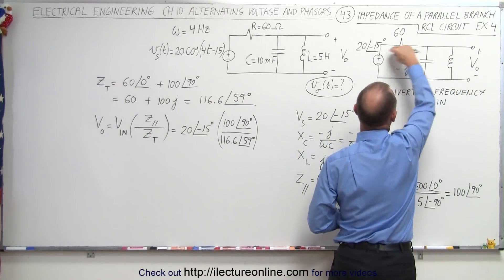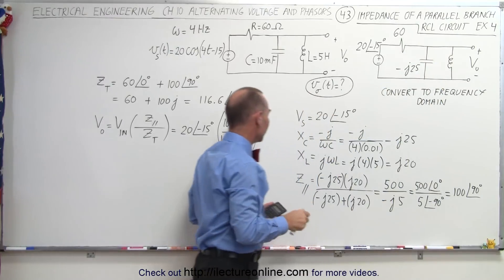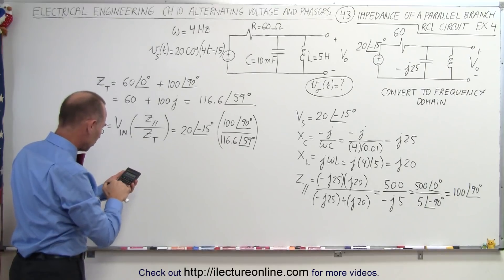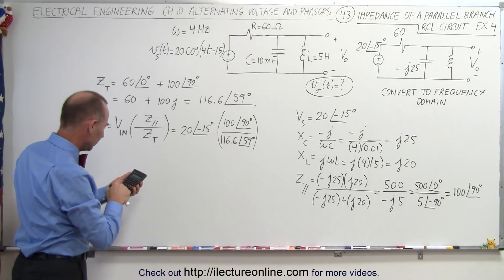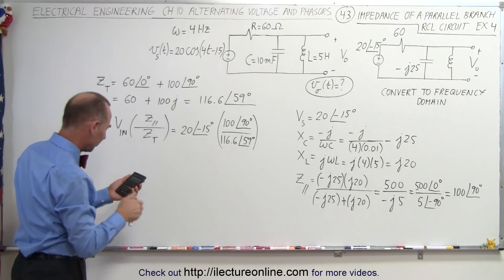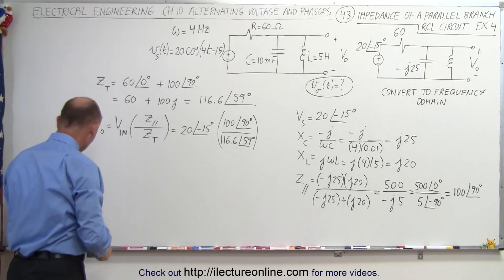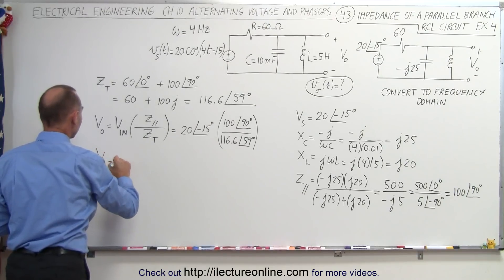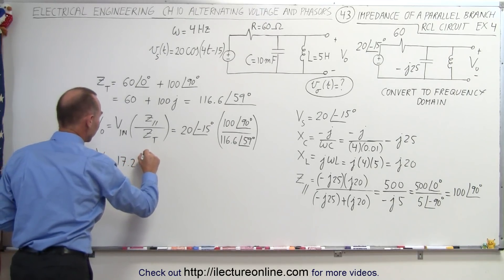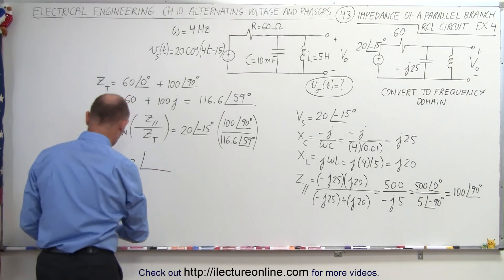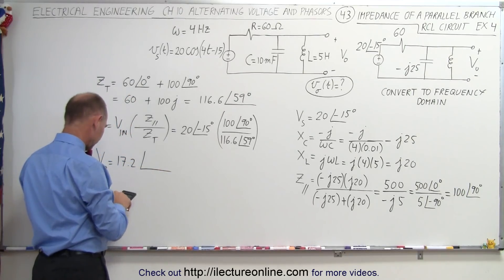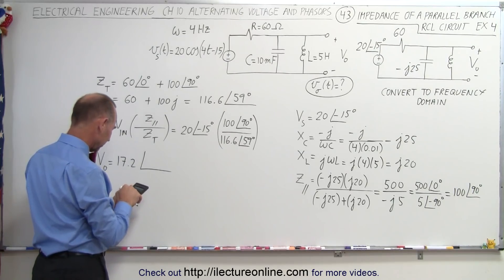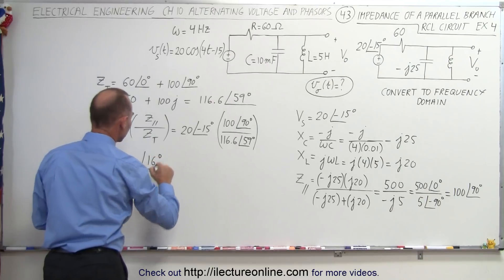That gives us the portion of the voltage across the two parallel paths relative to the total circuit voltage. We get the output voltage as 20 times 100 divided by 116.6, which gives us approximately 17.2 volts. The phase angle is minus 15 plus 90 minus 59, which gives a phase angle of 16 degrees.